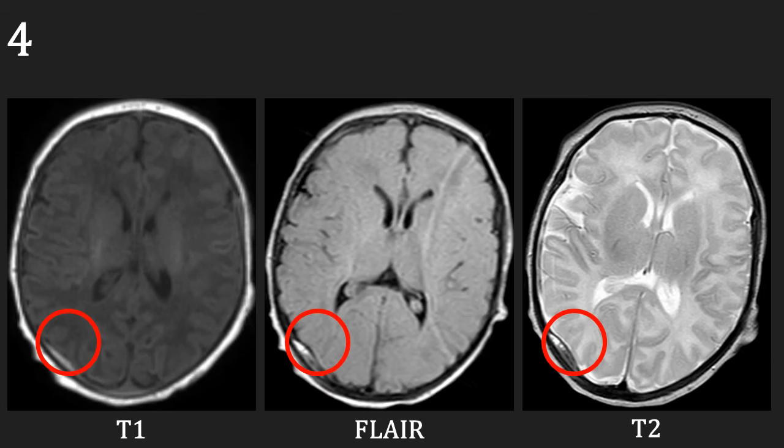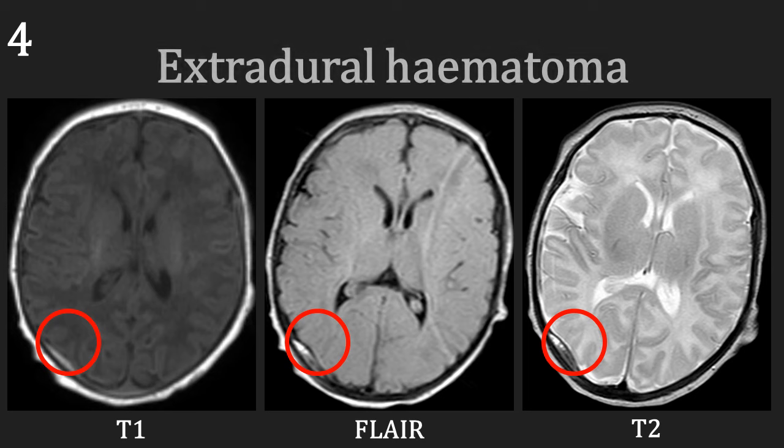This newborn baby was imaged because of a difficult vaginal delivery, initially attempted with forceps then converted to caesarean, and the clinical team were concerned about increasing head circumference. A previous CT had shown a right parietal skull fracture and an extradural haemorrhage. The MRI confirms this with a biconvex area of signal abnormality in the right parietal region. This is an extradural haematoma.